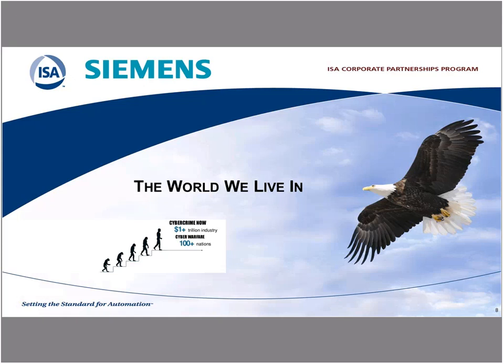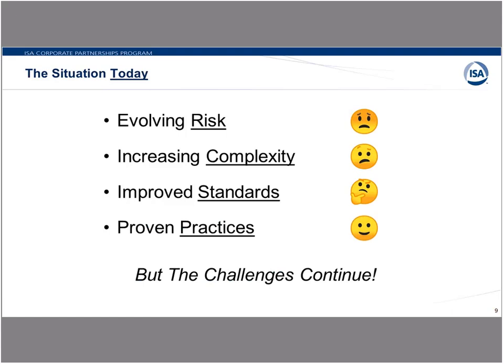Let's start with the world we live in. Cybercrime is now estimated to be a $1 trillion industry, which is some pretty significant numbers. What is it we're facing? I've broken this down into four general subcategories with a visual to indicate the general reaction to each one. First of all, risk is evolving continually. We are constantly seeing new reports of changes in the threat landscape. By risk, I'm talking about the function of threat, vulnerability, and consequence.